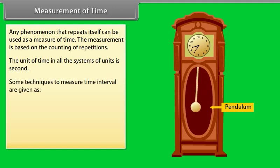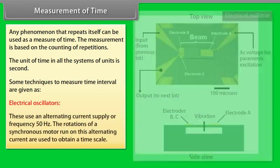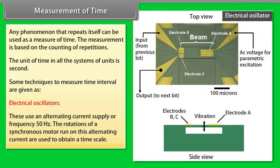Electrical oscillators, these use an alternating current supply of frequency fifty hertz. The rotations of a synchronous motor run on this alternating current are used to obtain a time scale.